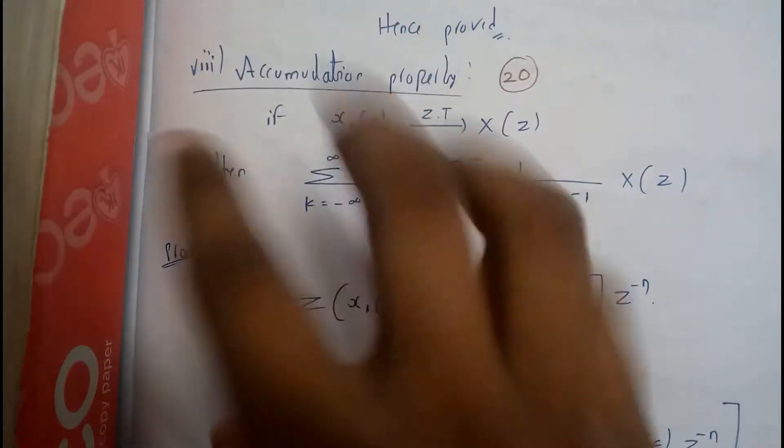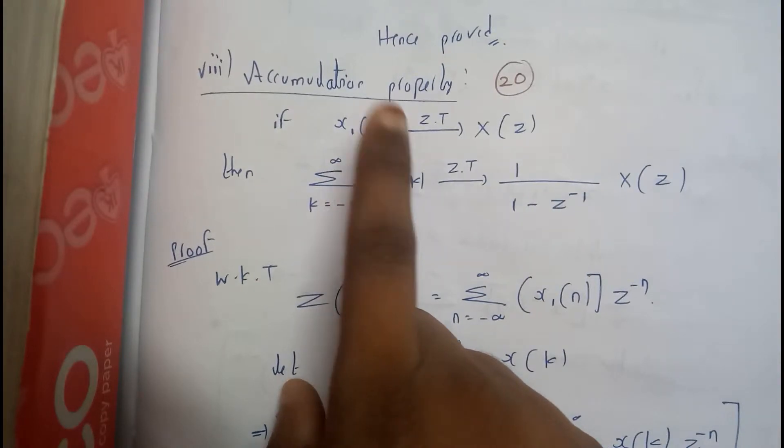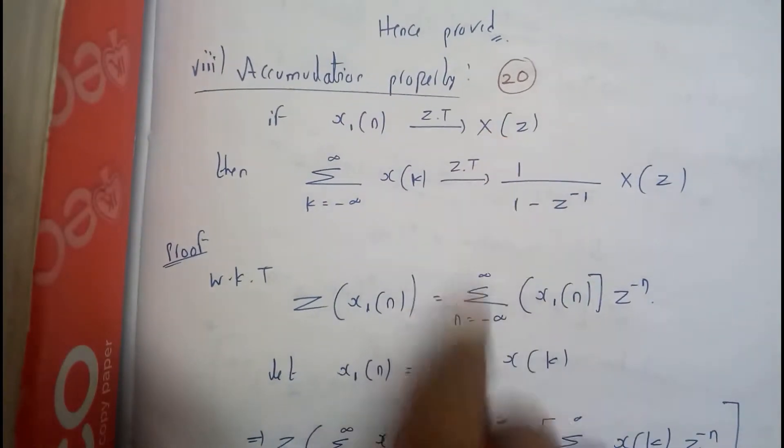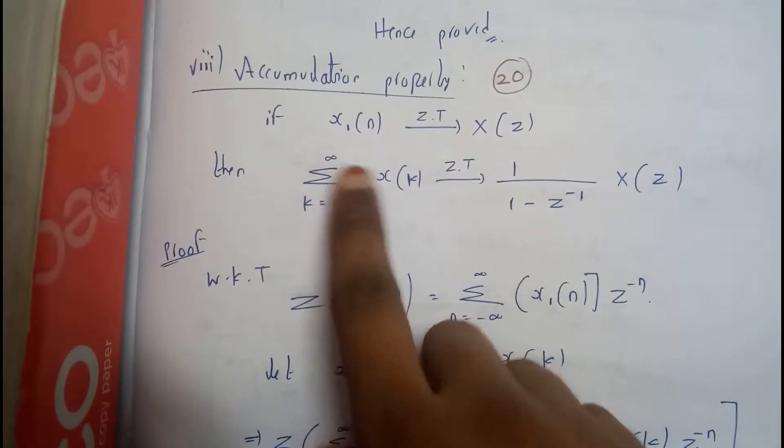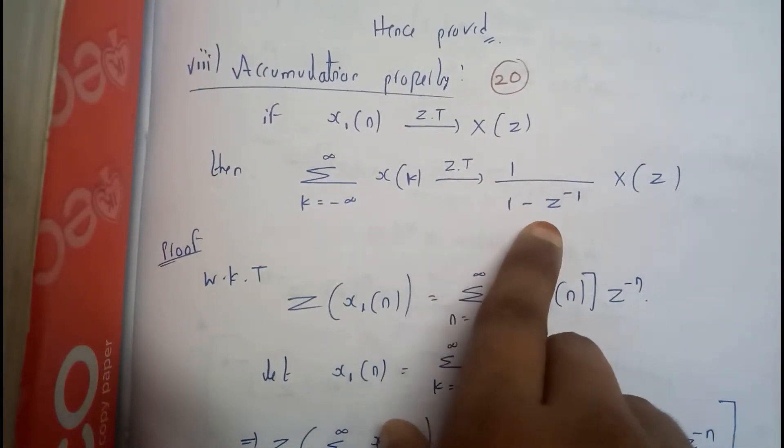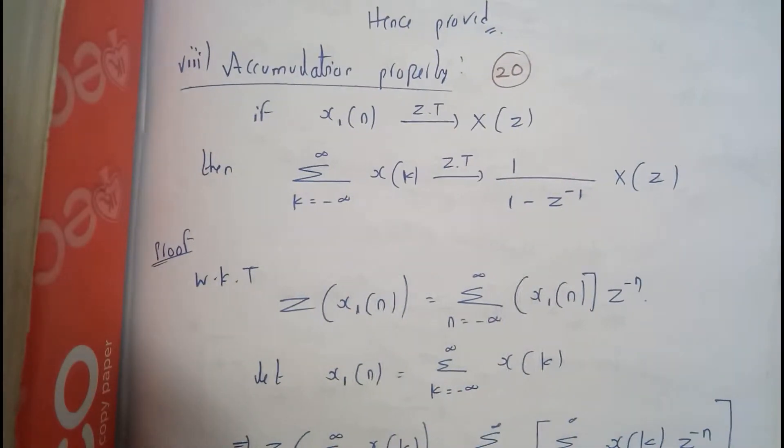So the main formula will be like this: if x₁, that is, the z-transform of x₁ is X(z), then the z-transform of sigma k equals minus infinity to n of x(k) should be 1/(1 - z⁻¹) times X(z).